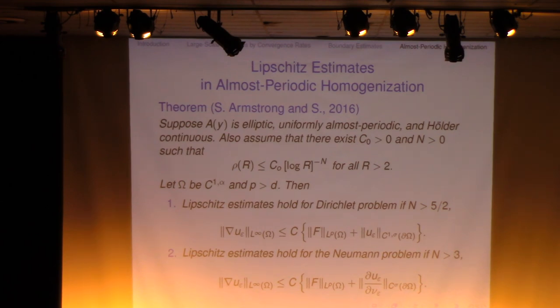So I want to mention that the smoothness is not a problem here. You can assume even if your coefficient is C infinity, but uniformly almost periodic and elliptic. The question is, do you have interior, even interior Lipschitz estimates? That would be a problem to think about.